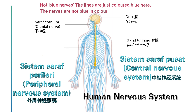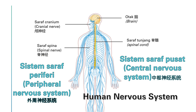The other component of the peripheral nervous system is the spinal nerve. The spinal nerve runs from the spinal cord to all other parts of the body. To recap: the human nervous system is composed of the central nervous system and the peripheral nervous system. The central nervous system has the brain and the spinal cord, whereas the peripheral nervous system has the cranial nerve and the spinal nerve.